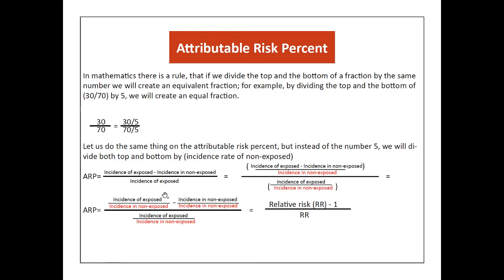We can show that these two formulas are equivalent. Starting with incidence in exposed minus incidence in non-exposed, divided by incidence in exposed — if we divide both the numerator and denominator by the incidence rate in non-exposed, we get the relative risk minus 1 divided by the relative risk. So the two equations are the same.